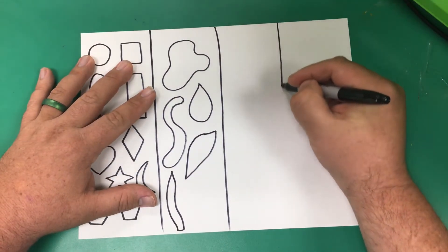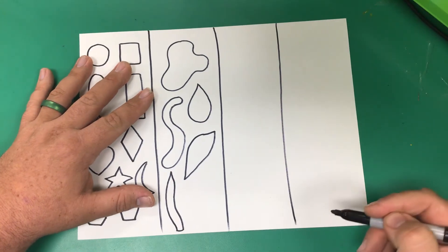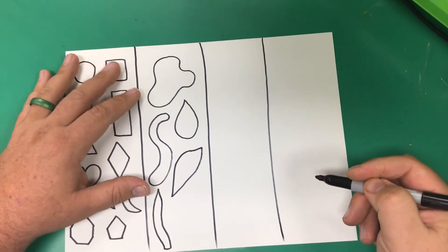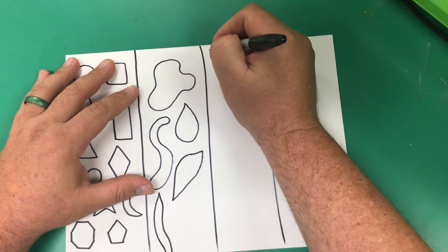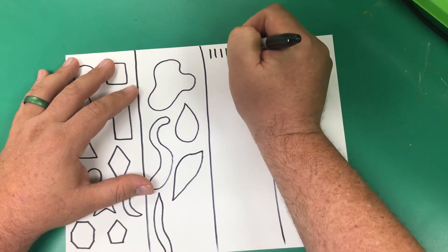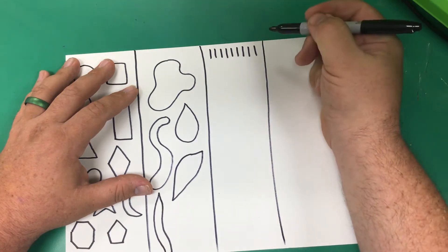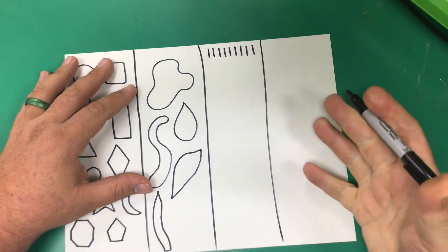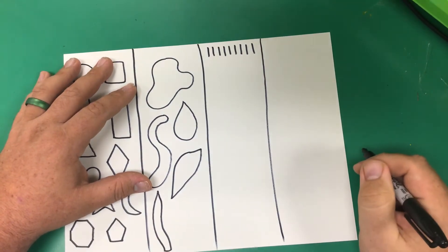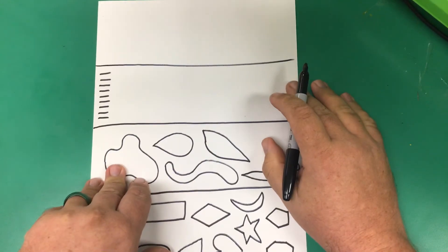Now the next section we're going to do is going to be lines. So if we're going to make a row of lines that go straight up and down, those are called vertical. If I give you a piece of paper and I say I want it to go vertical, then you turn it the tall ways. Tall ways is vertical.